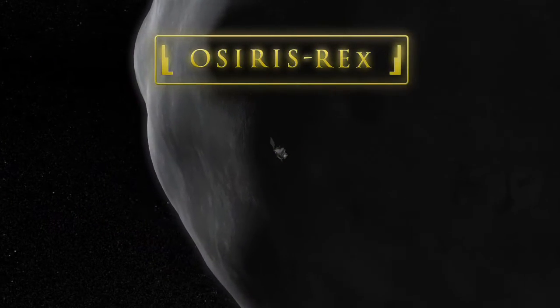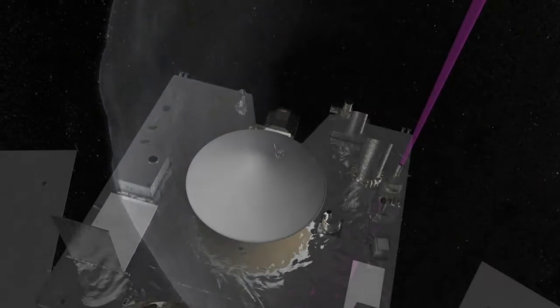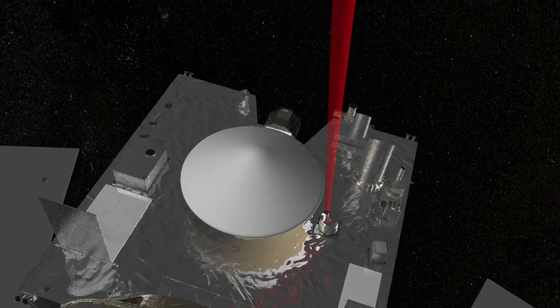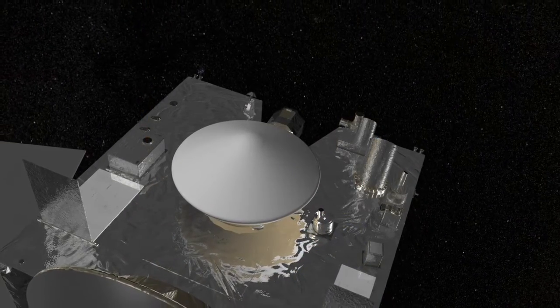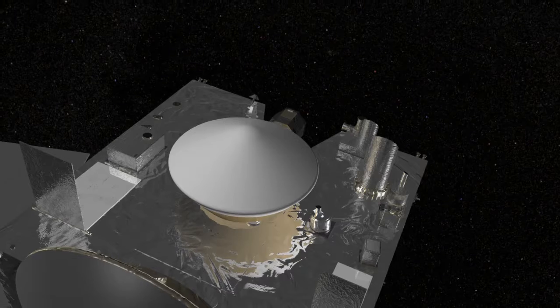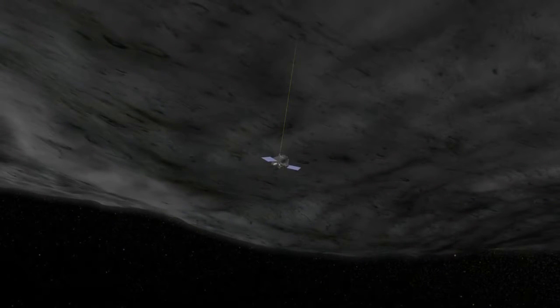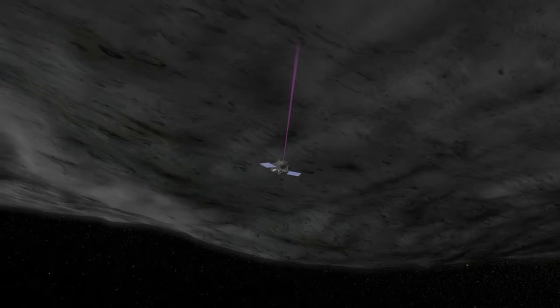OSIRIS-REx will launch in 2016 and arrive at Bennu in 2018, where it will spend over a year surveying the asteroid in unprecedented detail, determining its chemical makeup, mineralogy, and geologic history.